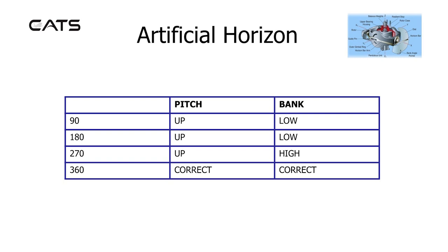If you turn through 90 degrees, 180 degrees, 270 degrees, and back round through 360 degrees, there are errors in the artificial horizon which can build up and wane with time. In pitch, it shows a false pitch up through 90, 180, 270 degrees and becomes correct again at 360 degrees.